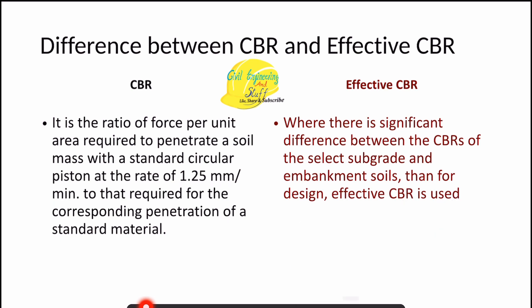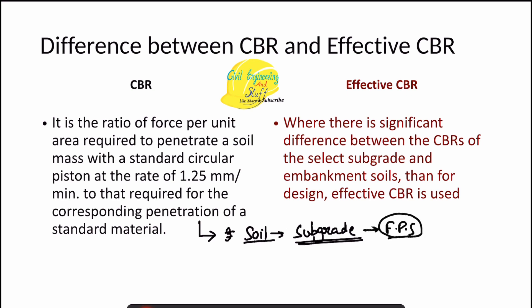The CBR value is found for the in-situ soil that is to be used as the subgrade layer of a flexible pavement system. Through this we find the bearing ratio with respect to the standard material, and if the value satisfies the minimum CBR requirement, this soil is good to use for the subgrade layer.